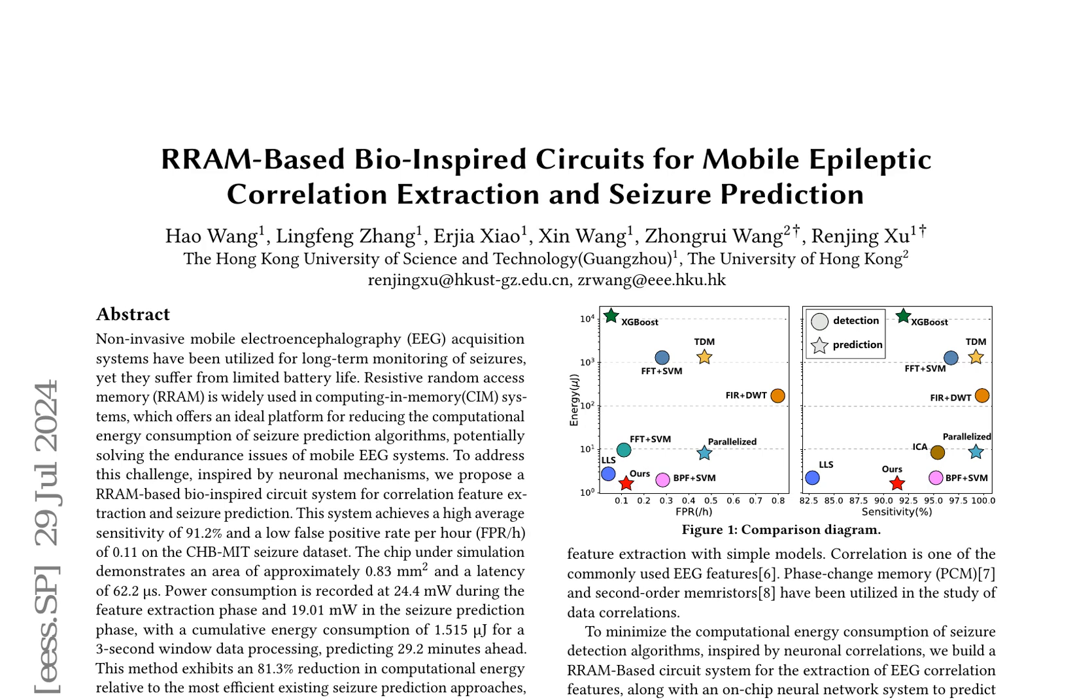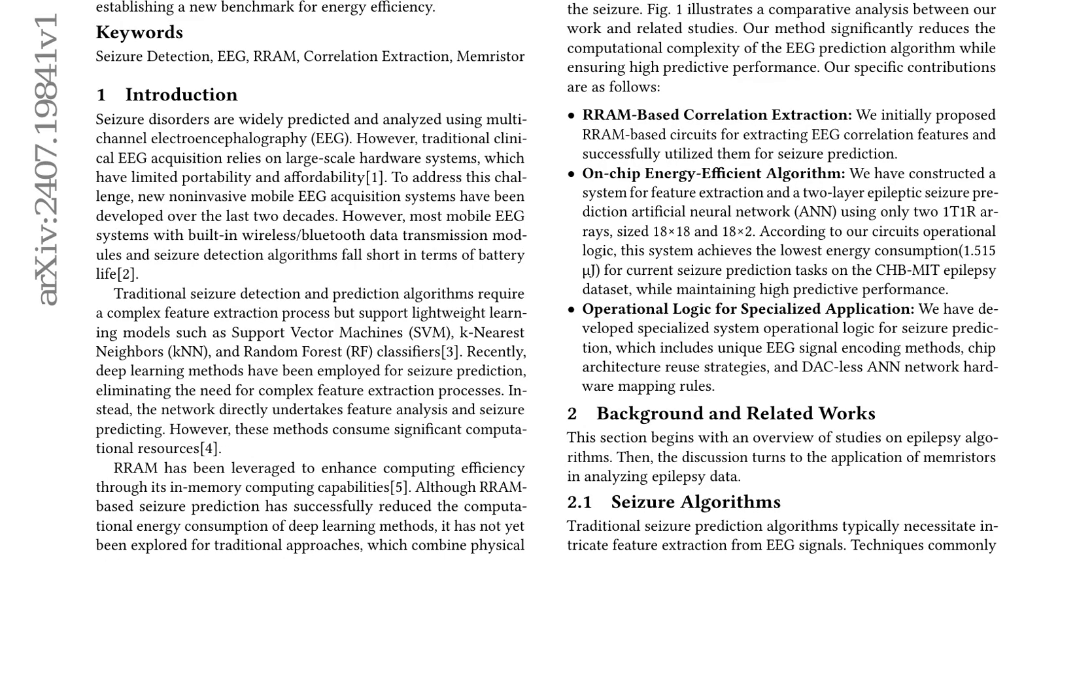It also highlights the potential of deep learning methods for seizure prediction, which, however, require significant computational resources. The authors then introduce their approach, which combines RRAM-based circuits for extracting EEG correlation features with an on-chip neural network system for predicting seizures. The specific contributions of this work include the development of RRAM-based circuits for EEG correlation feature extraction and a two-layer artificial neural network (ANN) for seizure prediction.